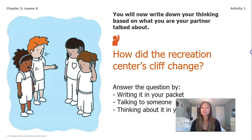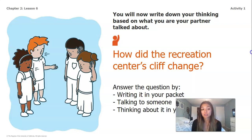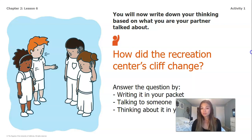Now we're going to take our thoughts from what you just talked about with your person at home and actually write it down. Same question: how did the recreation center's cliff change? You guys can go ahead and answer this question by writing it down in your packet. If you do not have your packet, you can practice telling your partner in one full answer how the cliffs changed, or you can think about it in your head.